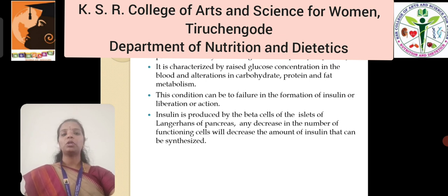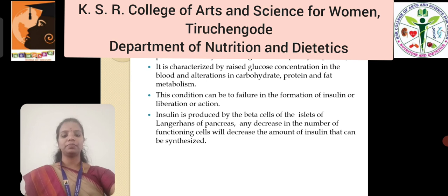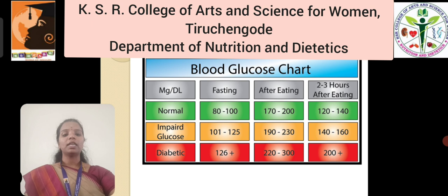Insulin is produced by beta cells of the islets of Langerhans present in the pancreas. Any decrease in the number of functioning cells will decrease the amount of insulin that can be synthesized. This chart represents the blood glucose level during fasting and postprandial level.